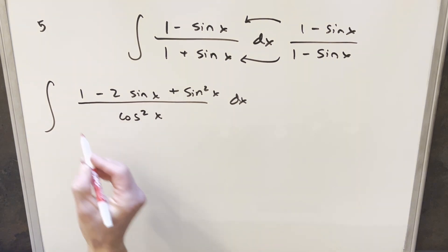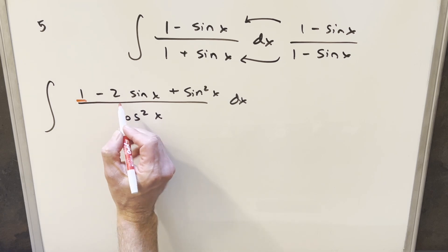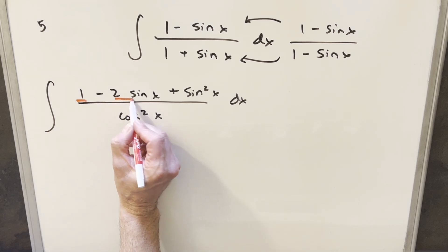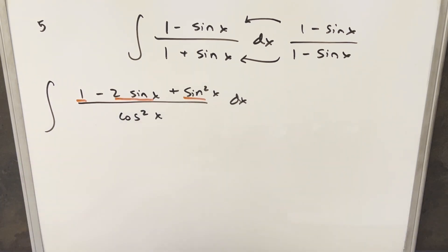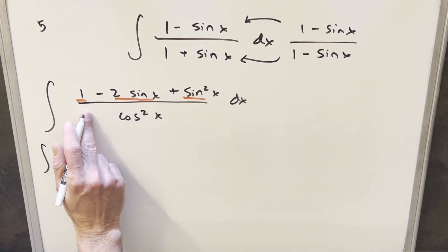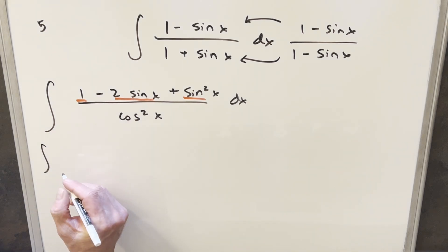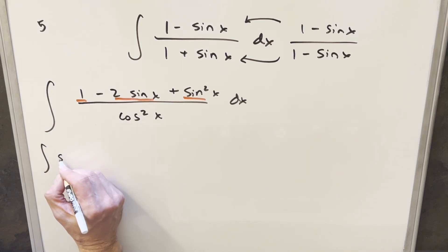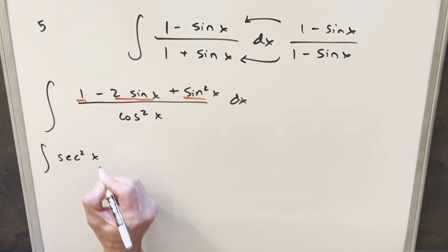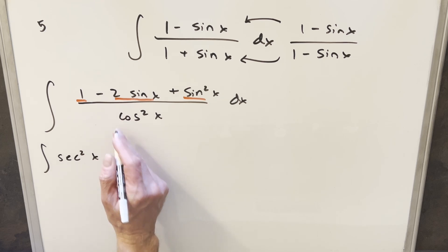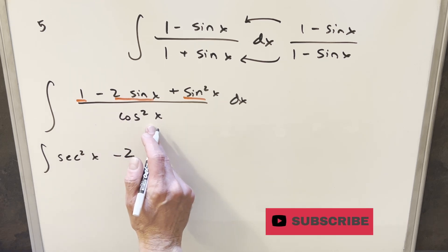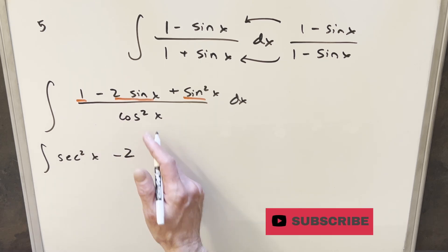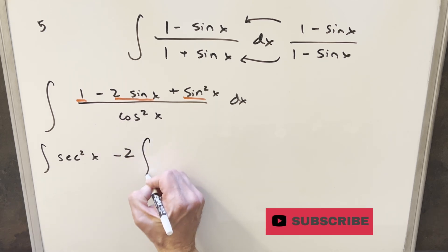Now that we've got three different terms that we're adding or subtracting, I can break this up into three integrals and divide by cosine squared. When I divide 1 by cosine squared x, I can write this as secant squared x. Then here I'll bring a minus 2 out front. Sine over cosine squared x I can break up: sine over cosine is tan x,